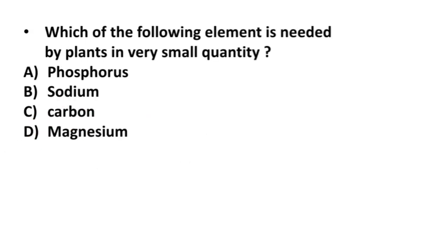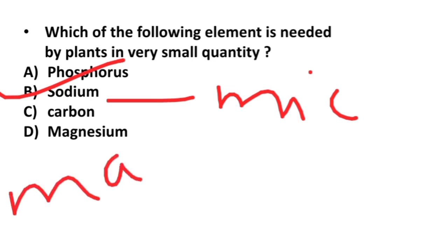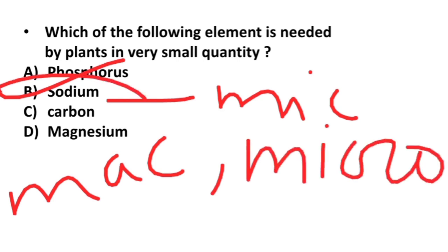Now moving on to the next question, which of the following element is needed by plants in very small quantity? Phosphorus, sodium, carbon, or magnesium? Its correct answer is option B, sodium, because it is a micronutrient. There are two types of nutrients which are required by a plant: macronutrients and micronutrients. Sodium is a micronutrient, that's why it is required in very small quantity by plants.